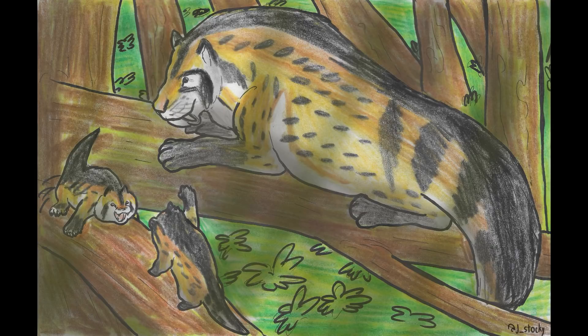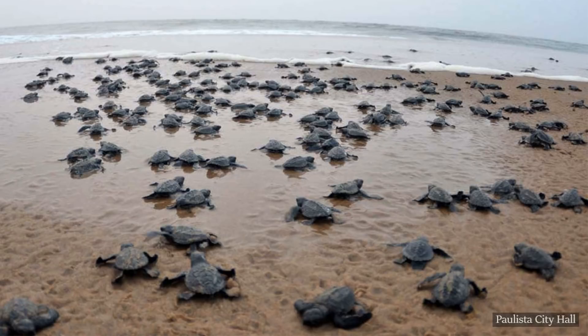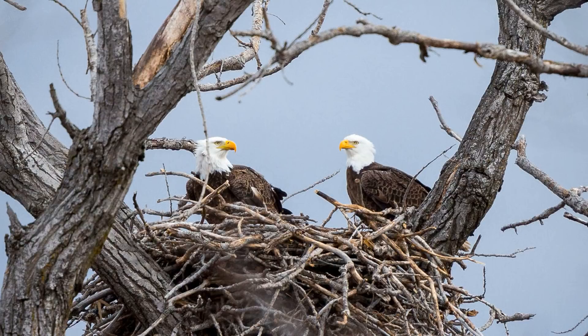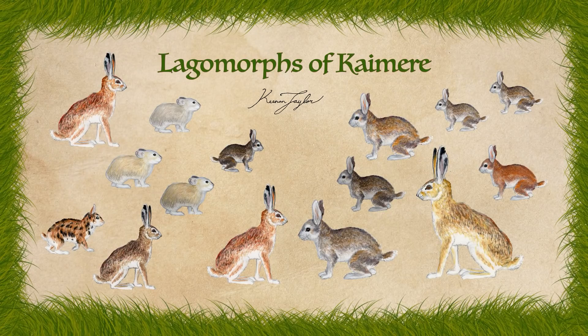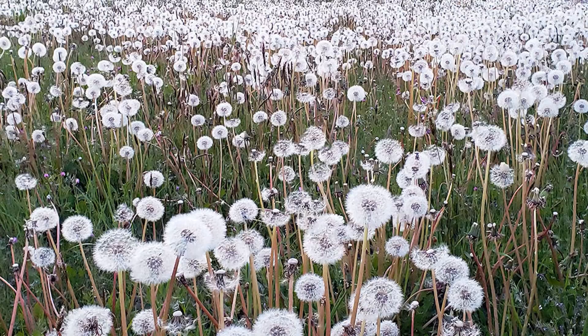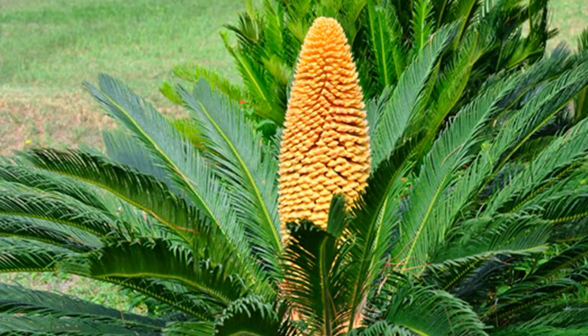Although mammals tend towards K selection and reptiles usually invest in R selection, there is a lot of overlap. Eagles are typical K selection specialists with long investment in a few offspring, and rabbits follow the trends of R selection with large litters and minimal parental care. Although often not discussed, plants actually serve as better examples of the extremes. Dandelion plants will cast hundreds if not thousands of seeds into the air, while many cycads only have a single seed every few years.